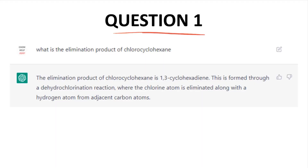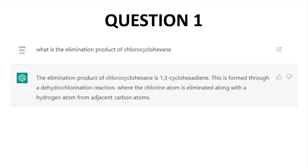Question 1: What is the elimination product of chlorocyclohexane? Right off the bat, ChatGPT misidentifies the product as 1,3-cyclohexadiene — this reaction has nothing to do with the Diels-Alder. But otherwise the answer is okay; it is a dehydrochlorination. This is not a terrible start, even though it did mess up the product.